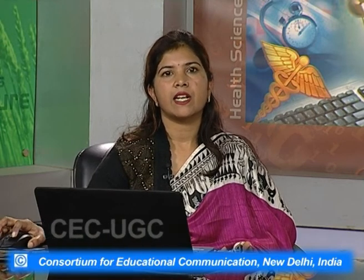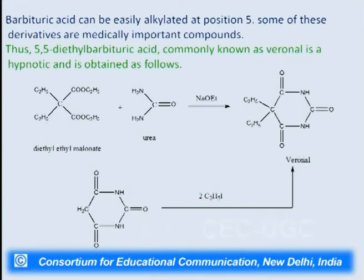Barbituric acid can be alkylated at position 5, and some of these derivatives are medicinally important compounds. Thus 5,5-diethylbarbituric acid, also known as veronal, is a hypnotic and is obtained by condensation of diethyl ethyl malonate with urea in the presence of sodium ethoxide, giving the biologically active compound veronal which acts as a hypnotic.